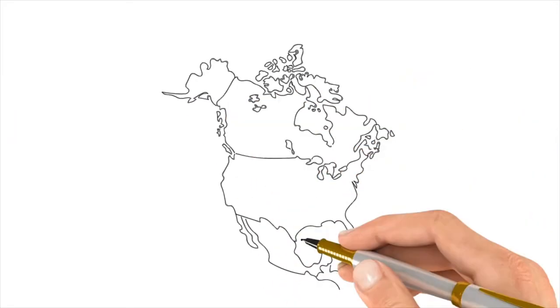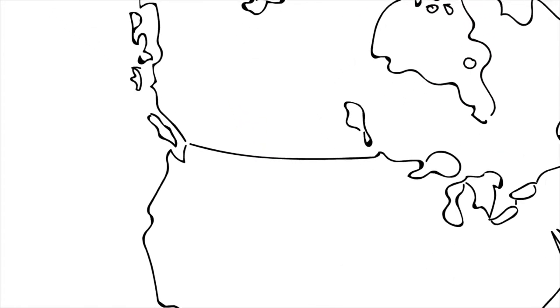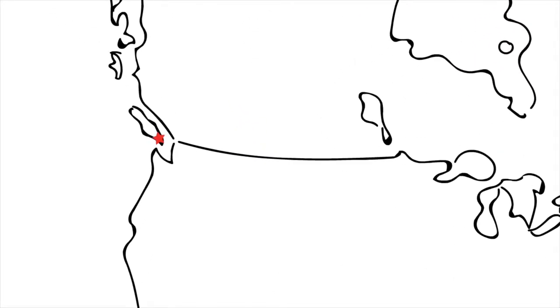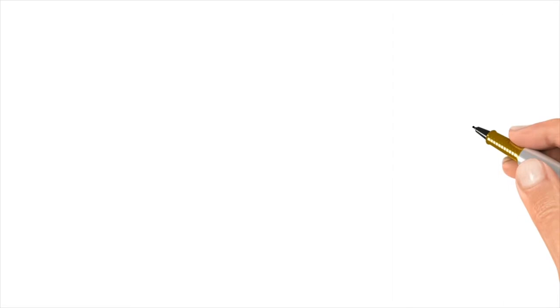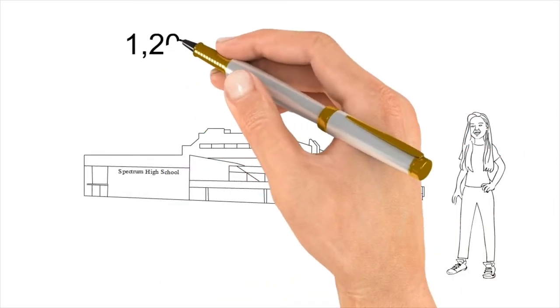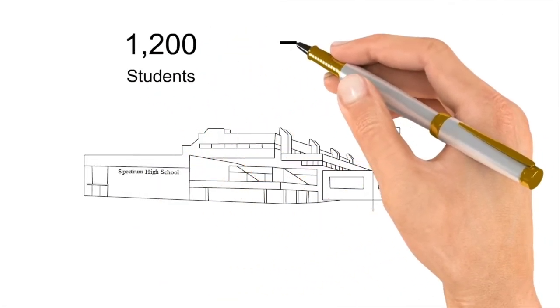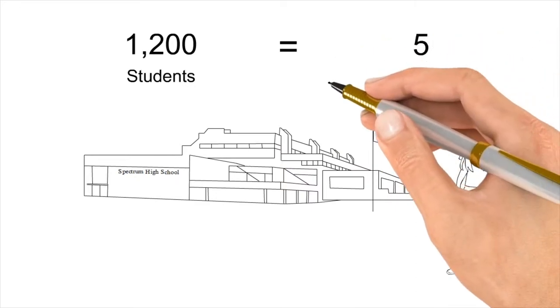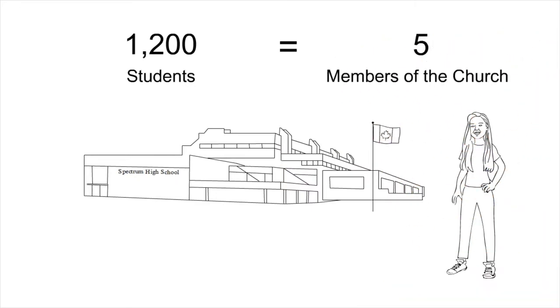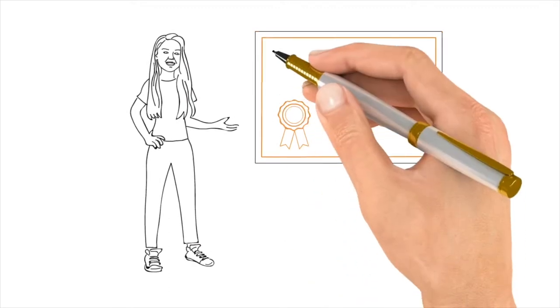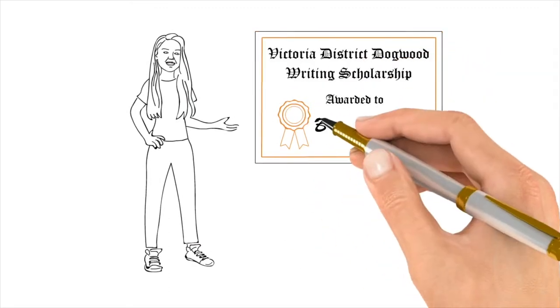Danette and Brittany live in an area where there aren't very many members of The Church of Jesus Christ of Latter-day Saints. In Brittany's high school of 1,200 students, there were only five members of The Church, so submitting a religious piece was pretty bold. But she got the scholarship.